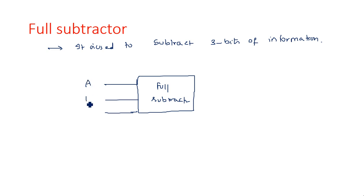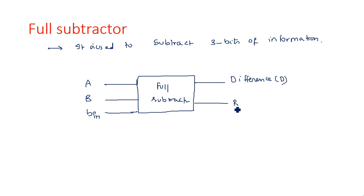The three inputs are A, B, and B-in. B-in is nothing but borrow input. And here we have two outputs: difference D and borrow out B-out. B-in is borrow input — observe the difference — and the outputs are difference D and borrow out B-out.